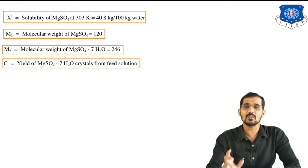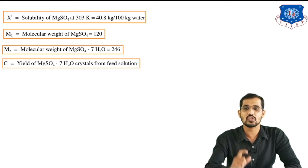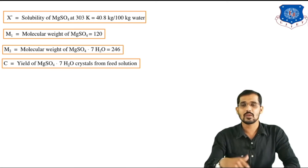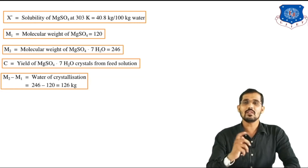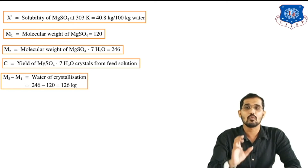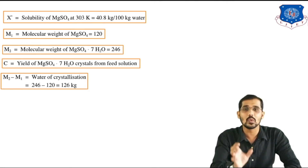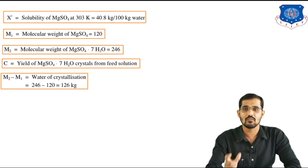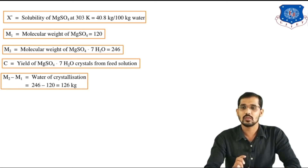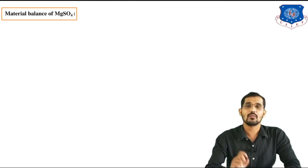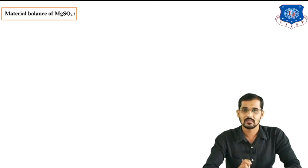C is the yield of MgSO4·7H2O crystals that we need to calculate. First, we calculate water of crystallization: M2 − M1 = 246 − 120 = 126 kg. Now we apply the material balance for MgSO4 using the formula derived earlier.